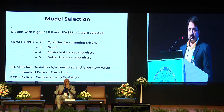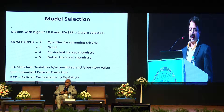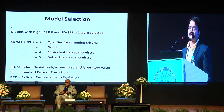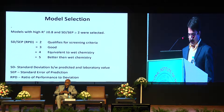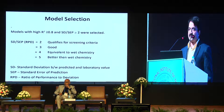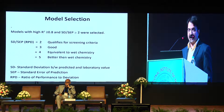The criteria for model selection are that R² should be more than 0.8, and the ratio of standard deviation to standard error of prediction — also known as ratio of performance to deviation (RPD) — should be 2 or more. An RPD of 4 is considered equivalent to wet chemistry, and an RPD of 5 is considered even better than wet chemistry because there is no error of handling.